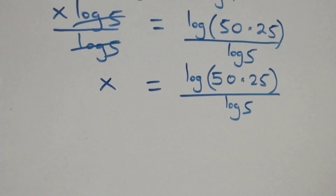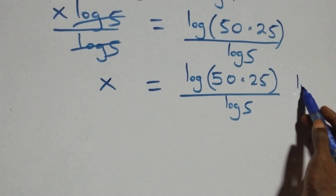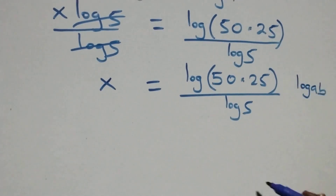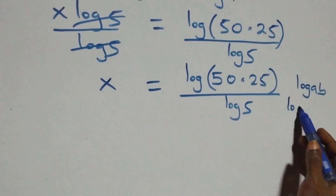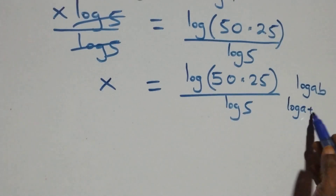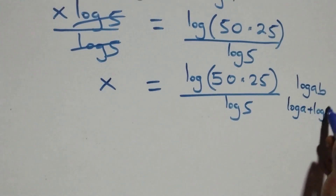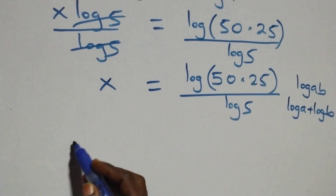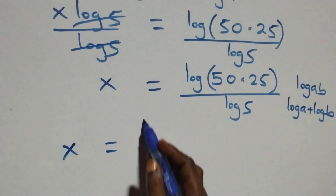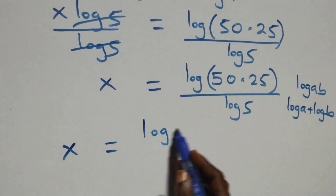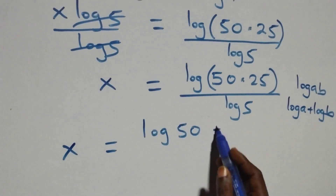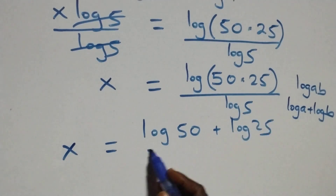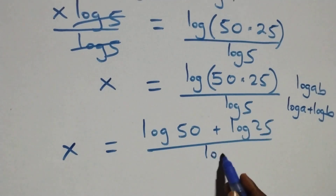Then this follows the law of logarithm: when we have log of a times b, this is the same thing as log a plus log b. So what we have here becomes x equals to log 50 plus log 25 over log 5.